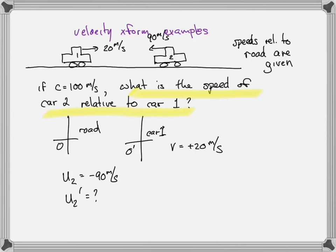In a Galilean transformation, it would be minus 110 meters per second. But the speed of light is 100 meters per second. That's the speed limit. So the correct transformation, the Lorentz transformation, is going to give, should give us something less than the speed of light.